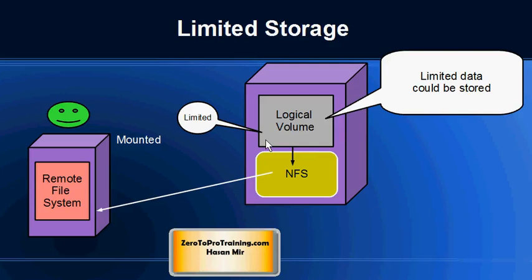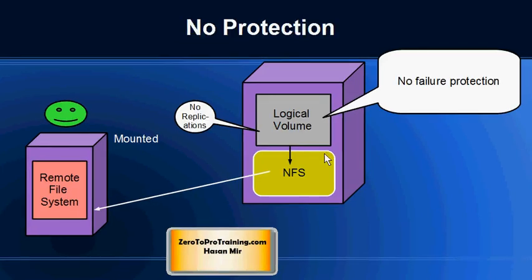Number one limitation: limited data could be stored, because network file system is going against a single volume on a single computer. So obviously, the amount of data that could be stored is limited to the capacity the disk has on that machine. The second problem is that there is no protection against hardware failures. If this logical volume goes down, all the machines that were using this volume will lose the connection and all the applications will stop working.